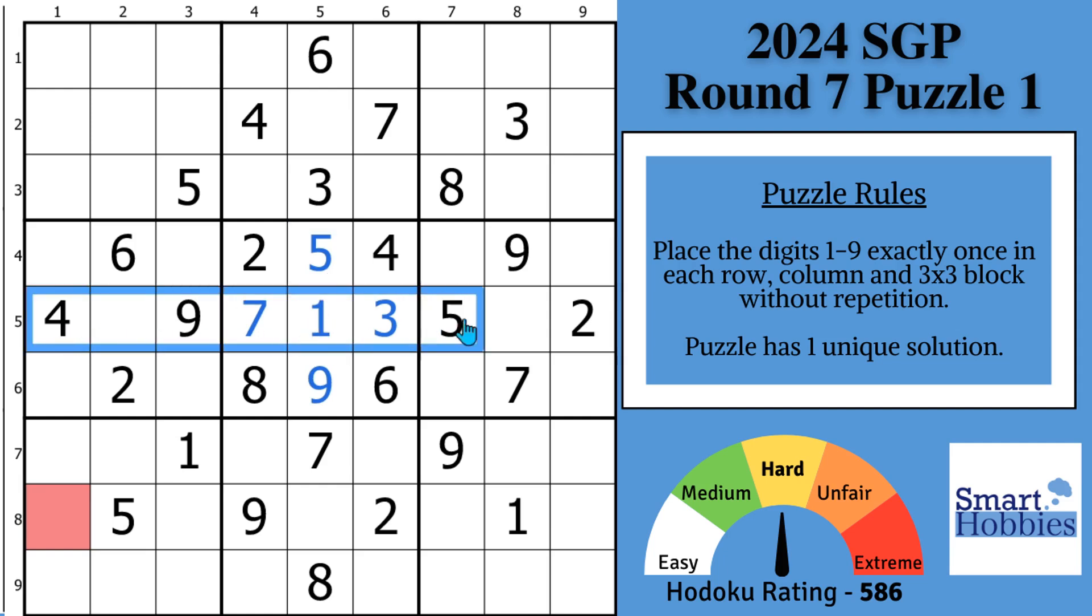Now look across row 5. You only have two cells missing. You have a 1, 2, 3, 4, 5, 7, and 9. We just need a 6 and an 8. You see that the 6 is here in block 4. That's got to be your 8 and that's got to be your 6. You can do the same thing here in column 5.